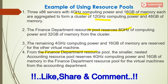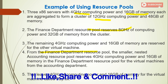You can take from that finance department pool again — for example splitting the 8 GHz: 4 GHz for the finance department, 4 GHz for the accounting department. That leaves 4 GHz of computing power and 16 GB of memory for a virtual machine called payroll. This is how you create multiple resource pools from a single cluster.